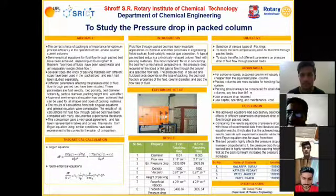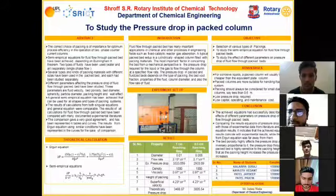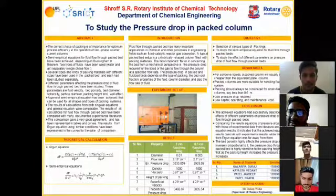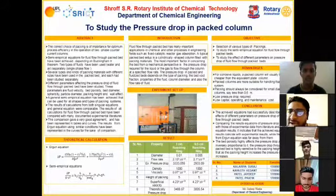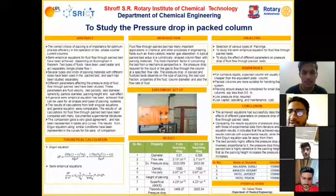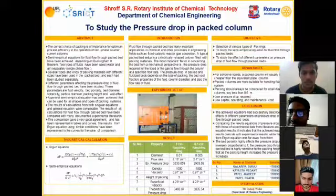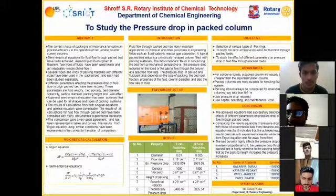In this image we see a column, and based on this experiment we find the pressure drop. We performed experiments for different sizes of Raschig rings: first is one centimeter Raschig ring and second is 0.5 centimeter Raschig ring. The given data includes diameter, flow rate, density, viscosity, height of packing, and superficial velocity. The diameter for the one centimeter Raschig ring is 0.01 m and for the 0.5 centimeter ring is 0.005 m. Based on this experiment, the calculated pressure drop for the one centimeter ring is 333.059, and for the 0.5 centimeter ring is 2933.09. The theoretical pressure drop values are 3466.87 and 3005.54 respectively.